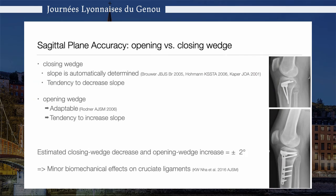On sagittal plane accuracy and slope corrections, we have to admit that with opening wedge osteotomy there is a tendency, albeit very slight, to increase the slope a little bit, while with the closing wedge you will have a decrease in slope. But these have very minor biomechanical effects on the cruciate ligaments, and therefore I think they are of no further discussion at this point using modern technology and modern tools.